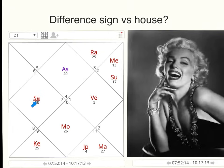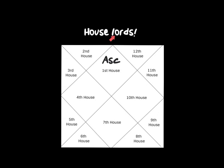Looking at Monroe's 10th house of career and status, the sign Aries is there — a pushy, aggressive, pioneer sign — and she had all of those qualities in her career. So check out this important factor: which signs are in each house, because the element of that sign goes into that area of your life. Also, every house in your chart has a lord — the ruling planet of the sign becomes the lord of that house. We'll do signs and their lords next video.